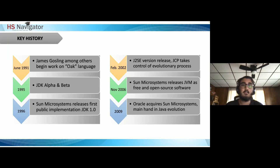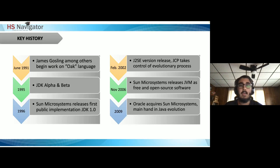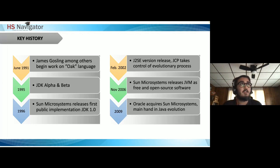They wanted to design Java with a C or C++ style syntax that would be familiar to programmers, but make it simpler and run more effectively. In 1995, we get the Java Development Kit alpha and beta. When Java was first being developed, it was mainly for embedded systems — like electronic appliances — and then it evolved into the massive programming language we know today.